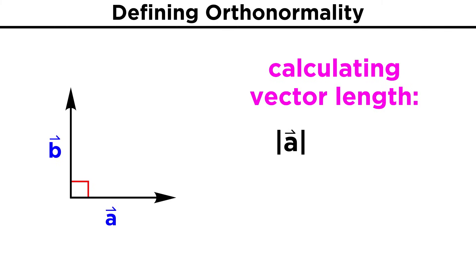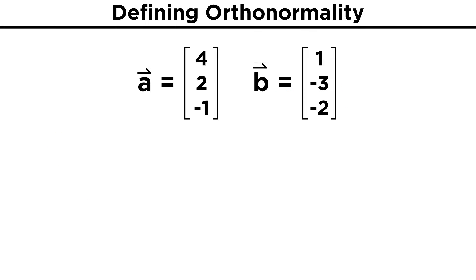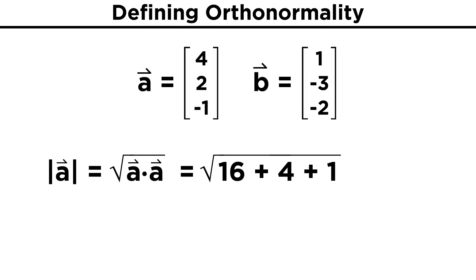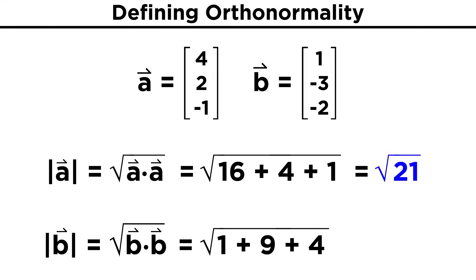We have already seen that one way to get the length of a vector is to take the square root of the dot product involving the vector and itself, meaning the length of vector a equals the square root of a · a. Now if we divide the original vector by that length, we get a new vector of length one. Taking our two vectors a = (4, 2, -1) and b = (1, -3, -2): the length of a is the square root of 4² + 2² + (-1)² = √(16 + 4 + 1) = √21. The length of b is the square root of 1² + (-3)² + (-2)² = √(1 + 9 + 4) = √14.